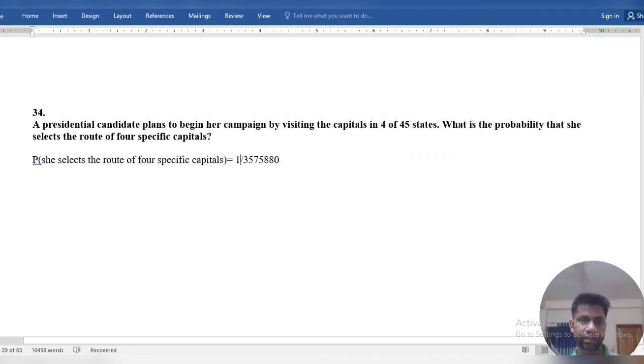So here we get that she selects the route to four specific capitals is one over 3,575,880. Okay, bye.